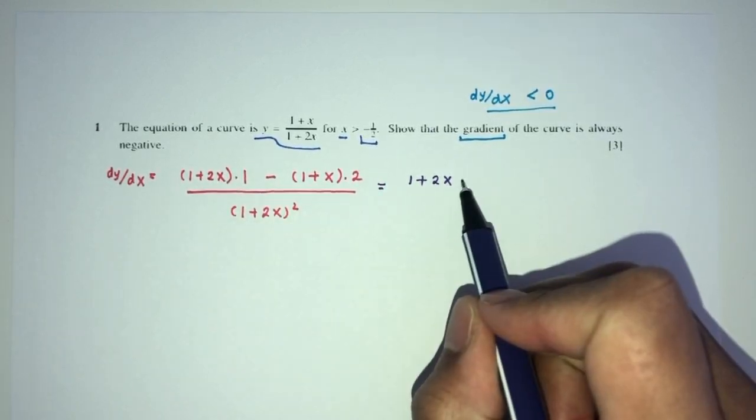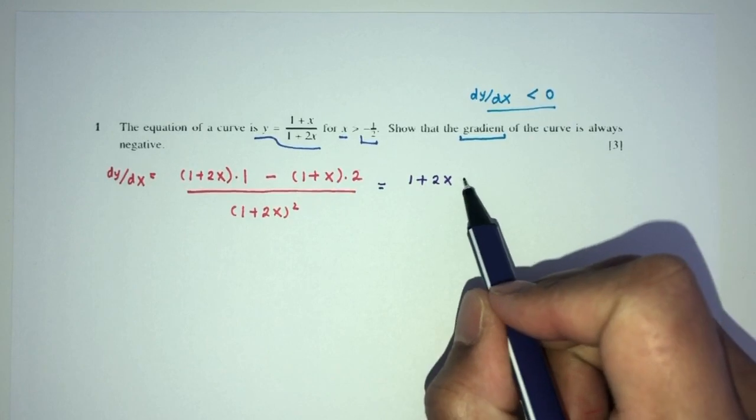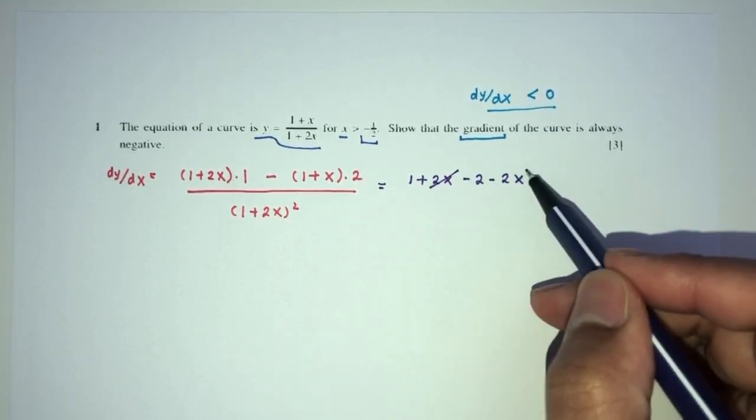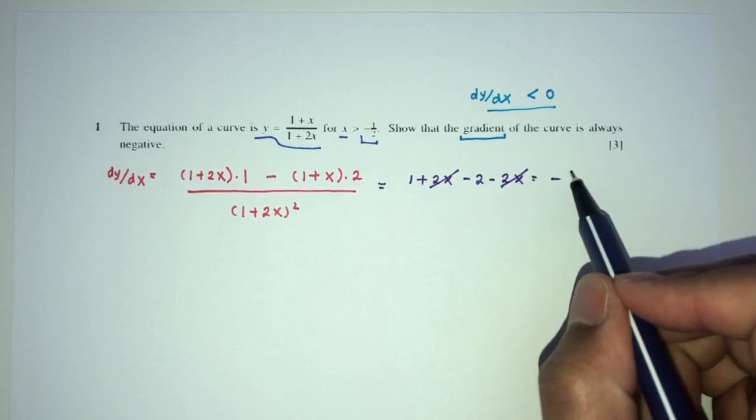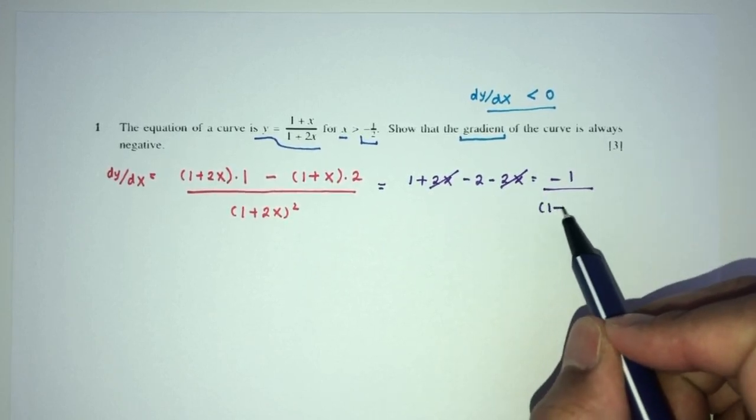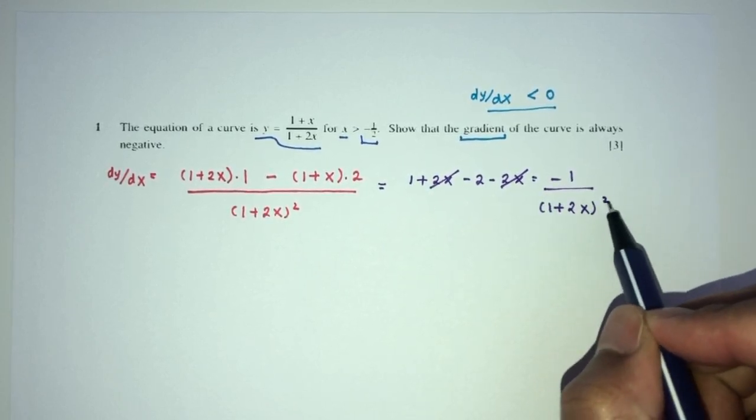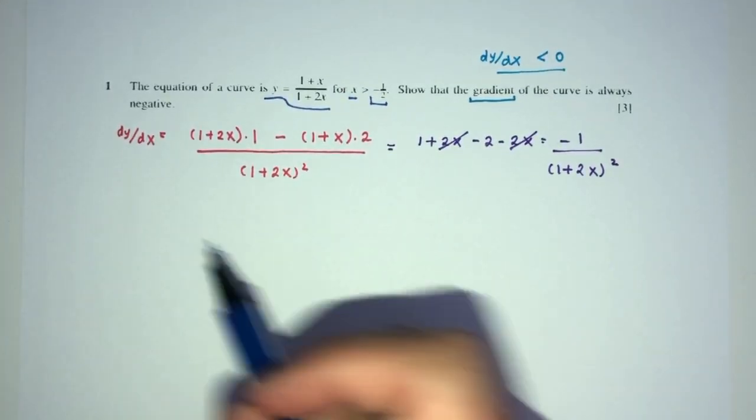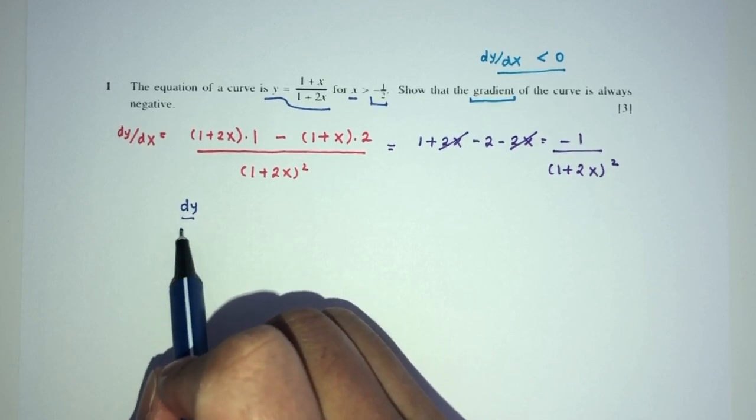Here we have minus 2 minus 2x. Now, this will cancel out, and you will have minus 1 over the value of 1 plus 2x square. Now, by observation, it's pretty easy to know why. For example, you will say, well, dy by dx, from what I can see,